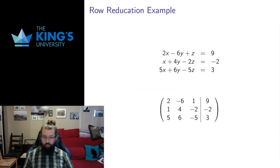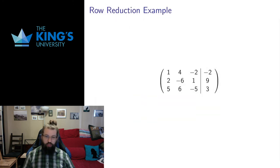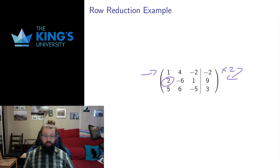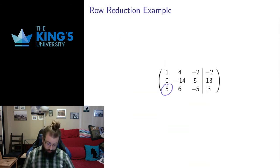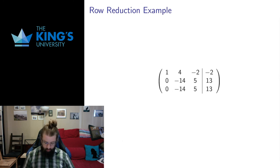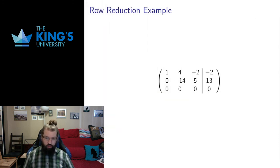Let me do one more example, going a bit more quickly. I'll translate this system — here's the translation. I have a leading 1 in the second row, so let me interchange the first and second rows to put that leading 1 at the top. I want to clear this 2, so I multiply the first row by 2 and subtract from the second row — that arithmetic gives me these numbers. I want to clear this 5, so I multiply the first row by 5 and subtract from the third row. Immediately I notice I have the same rows, so I subtract row 2 from row 3 and entirely get rid of row 3. Having a row of all 0s is perfectly fine.